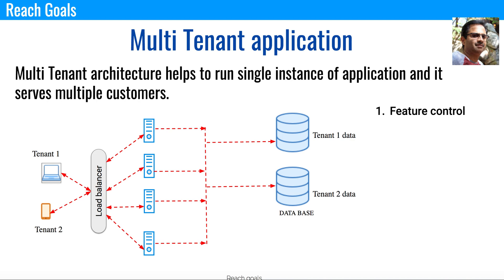The second reason is access control versus data security. Tenant 1 should only be accessing data related to Tenant 1, and should not access any data related to Tenant 2. For this reason as well, we need to know who the tenant is.